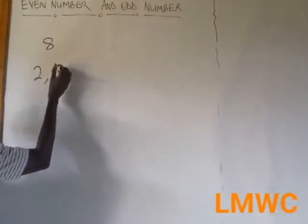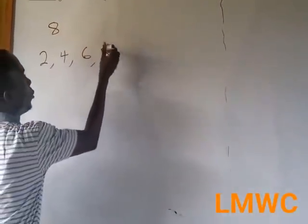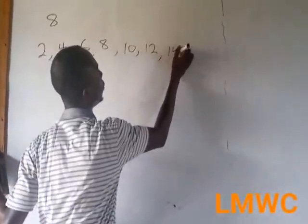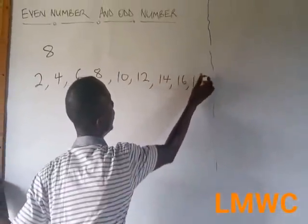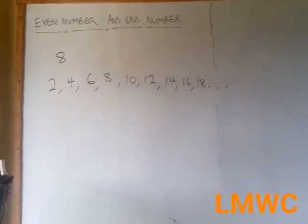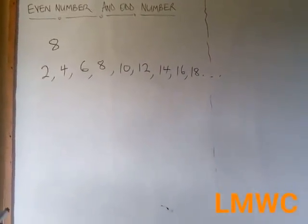So 2 plus 2 is 4, plus 2 is 6, 8. So you will be adding 2, 2, 10, 12, 14, 16, 18. So they are many. So once they are divided by 2 or divisible by 2, it makes it an even number.